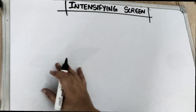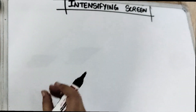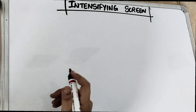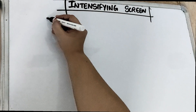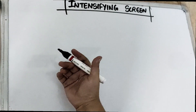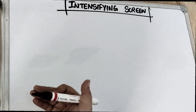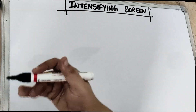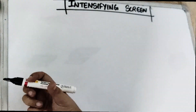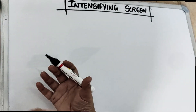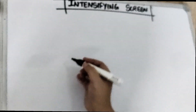Today's topic is the intensifying screen. Now that we have already covered the x-ray film, you will understand better that the x-ray film has got the emulsion layer. In the emulsion layer we have got the photosensitive, light-sensitive silver halide crystals. These silver halide crystals are swimming in the gelatin matrix.